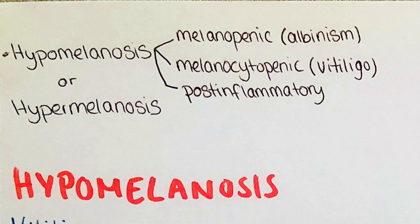If there is a disorder in the pigmentation of the skin, it is either hypomelanosis, meaning that the skin is less pigmented than the rest of the patient's body, or hypermelanosis, meaning that the skin darkens. Hypopigmentation can be differentiated into three types. The first is melanopenic hypomelanosis, where the number of melanocytes is not changed but the presence of melanin is reduced. Examples are albinism or depigmented nevus. The second type is melanocytopenic, where melanocytes are absent — an example is vitiligo. The last type is post-inflammatory leucoderma.